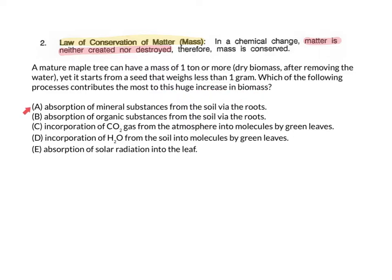A, the absorption of mineral substances from the soil via the roots. B, the absorption of organic substances from the soil via the roots. C, the incorporation of CO2 gas from the atmosphere into the molecules by the green leaves. D, the incorporation of water from the soil into the molecules by green leaves. Or E, absorption of solar radiation into the leaf. This question was asked of some college seniors as they were preparing to graduate. Almost half of them got it wrong. How did you do?